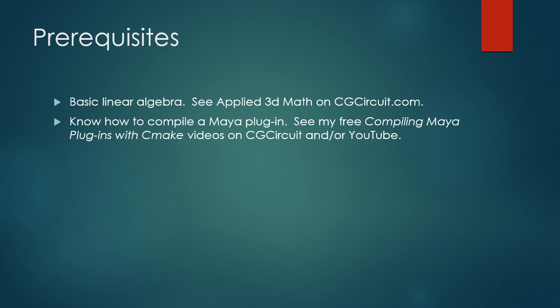You should also know how to compile a Maya plugin. If you don't, you can see my free videos on compiling Maya plugins with CMake, hosted on CGCircuit and YouTube. I won't be going over how to compile a plugin here since that's already covered in those videos. You'll also need Maya 2016 if you want to use the new GPU functionality, though Maya 2016 is not required if you just want the wrap deformer features in earlier versions of Maya.